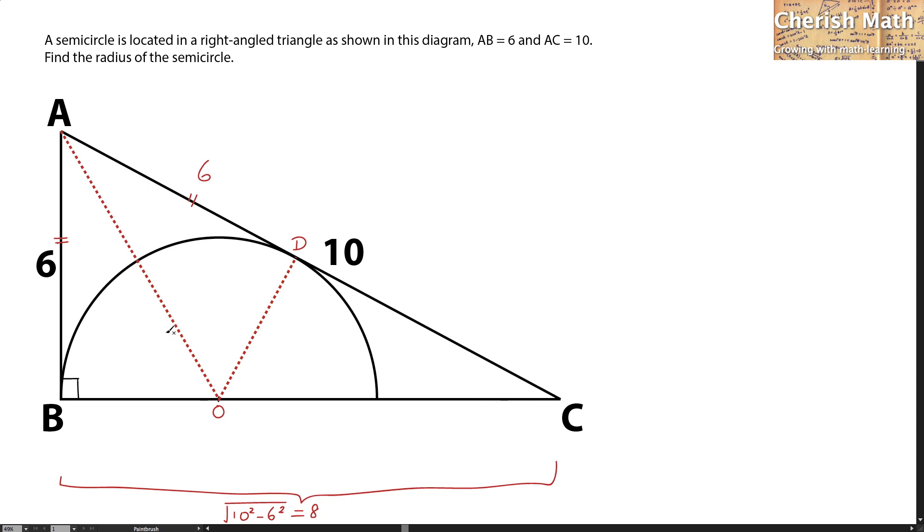Let the radius be R, and OB is the radius. Since the length of AD is 6 units, the length of DC would be 10 minus 6, which is 4.